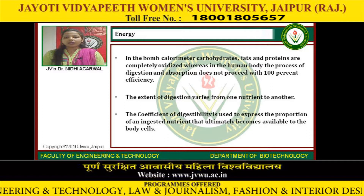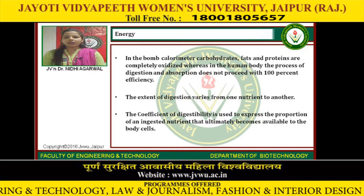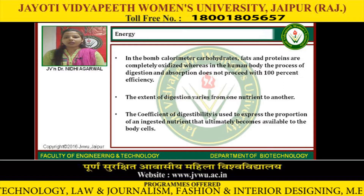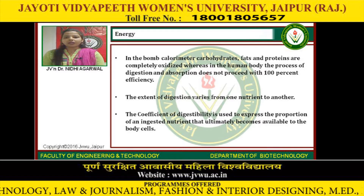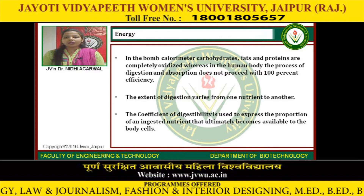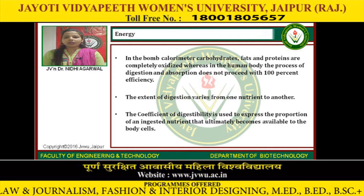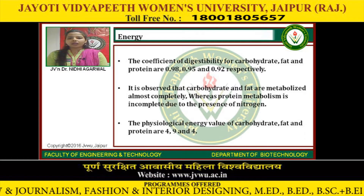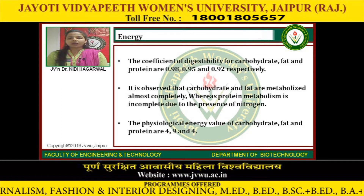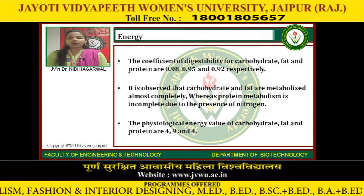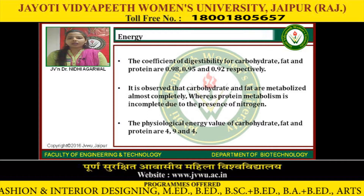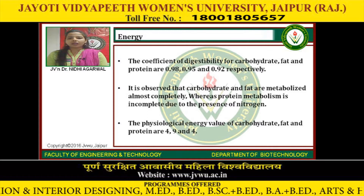In the bomb calorimeter, carbohydrates, fats and proteins are completely oxidized, whereas in the human body the process of digestion and absorption does not proceed with 100% efficiency. The extent of digestion varies from one nutrient to another. The coefficient of digestibility is used to express the proportion of an ingested nutrient that ultimately becomes available to the body cells. The coefficient of digestibility for carbohydrate, fat and protein are 0.98, 0.95 and 0.92 respectively. Carbohydrate and fat are metabolized almost completely, whereas protein metabolism is incomplete due to the presence of nitrogen.